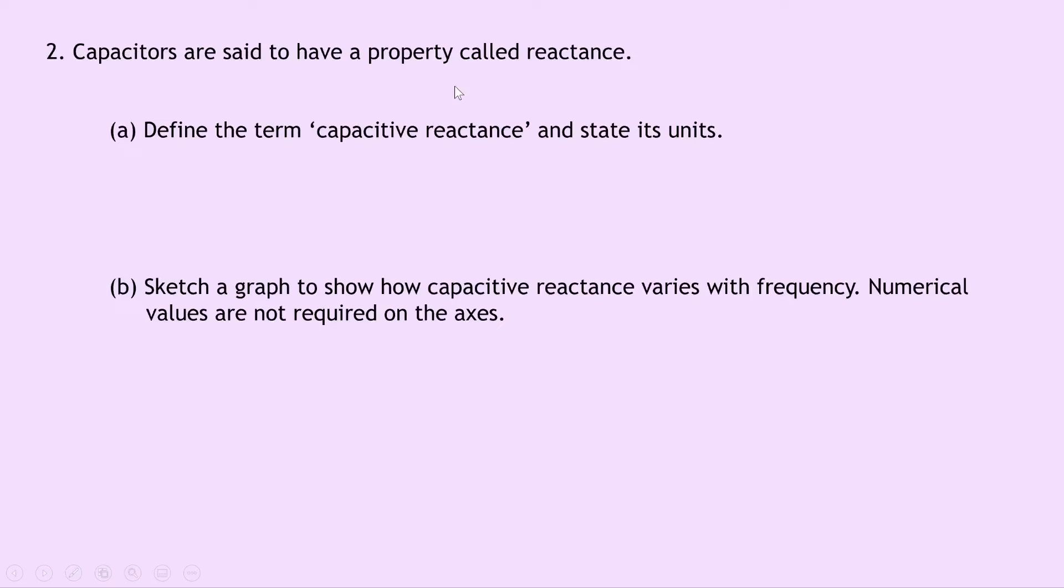Question two says that capacitors are said to have a property called reactance. Part A says to define the term capacitive reactance and state its units. Well firstly, capacitive reactance with the symbol XC is the opposition of a capacitor to changing current, i.e. AC current. And its units are ohms, just like resistance.